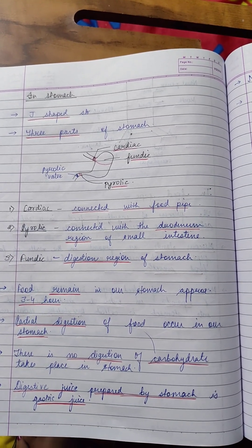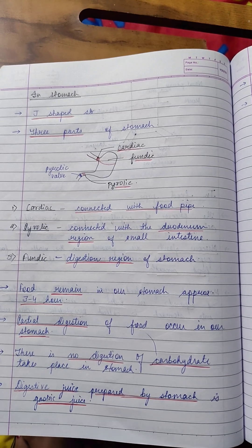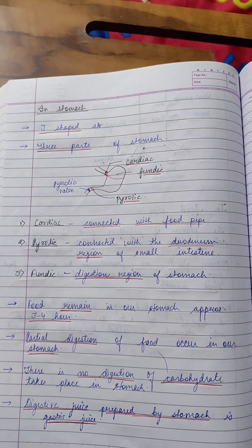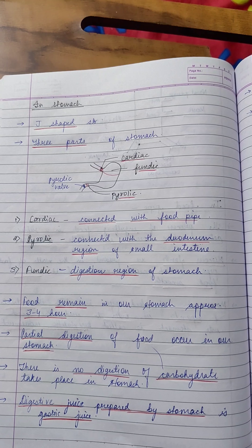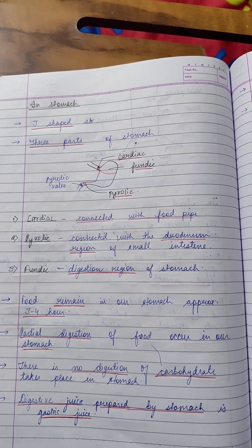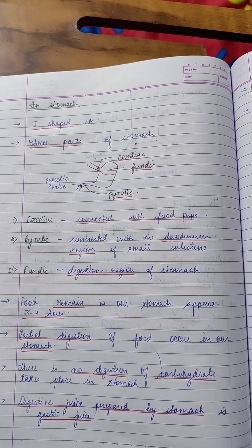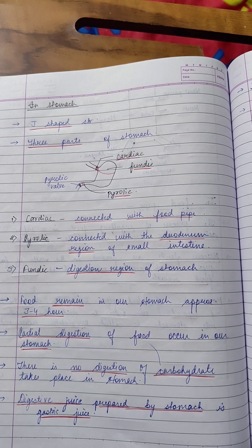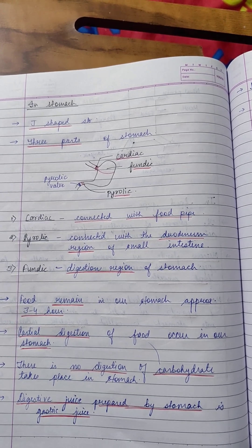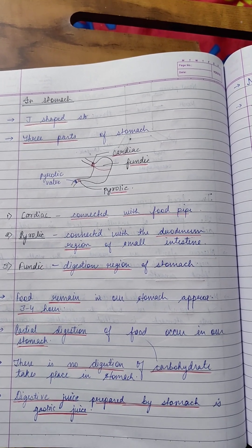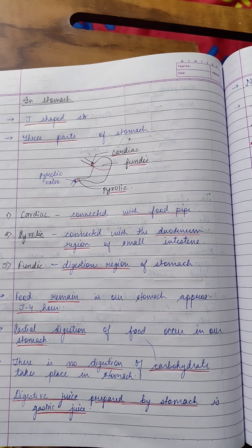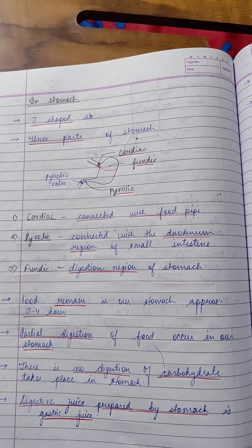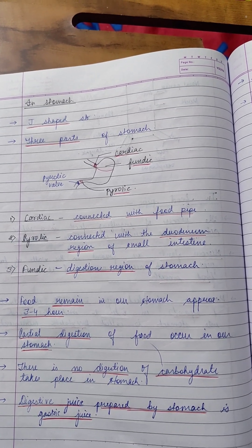The next portion is the stomach. Three parts of the stomach help in digestion of food. The food remains for 3 to 4 hours, and here partial digestion of food occurs. There is no digestion of carbohydrates in the stomach. The digestive juice prepared by the stomach is gastric juice, and the nature of gastric juice is acidic with a pH value of 0.9 to 1.5.